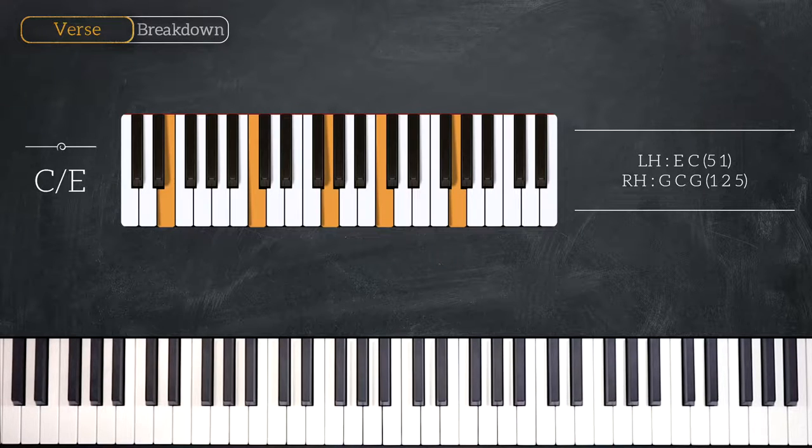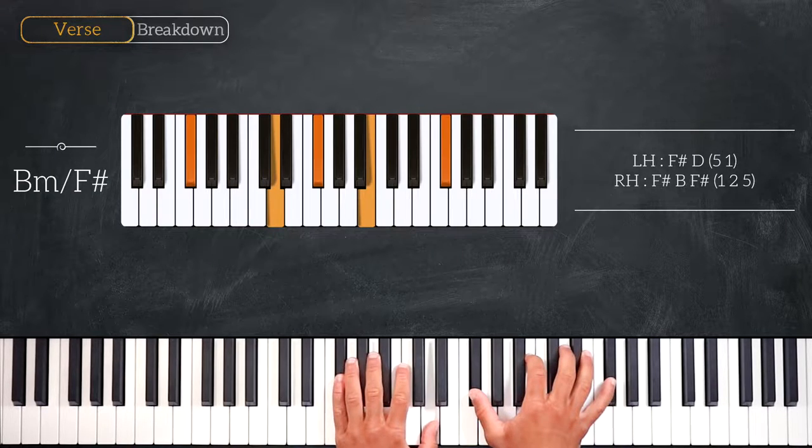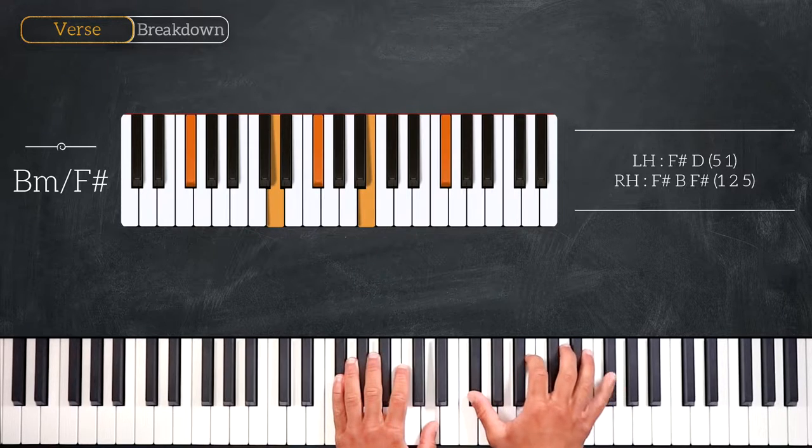Next, we'll have to play B minor over F sharp. Playing F sharp, D, F sharp, B, F sharp.